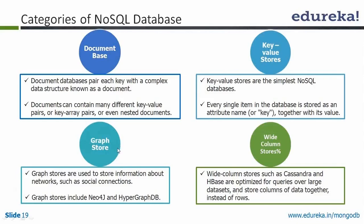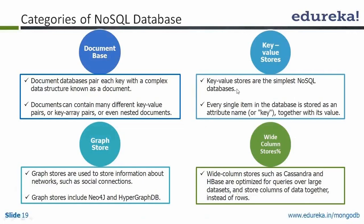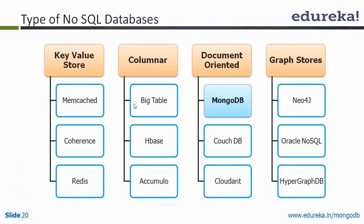Examples of graph stores are Neo4j and HypergraphDB, among others. A student asked which databases fall under key-value stores — that's on the next slide. Key-value store examples include Memcached, Coherence, and Redis, among others.